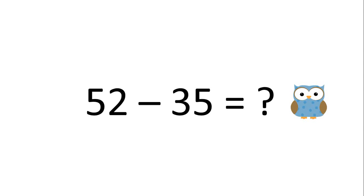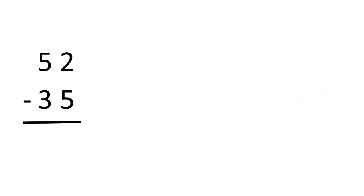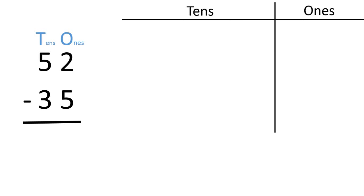Let's calculate 52 minus 35. We will begin by lining up the numbers like this. 52 is the larger number, so it goes on top. 35 is the smaller number, so it is written below 52. Let's represent 52 using place value blocks.